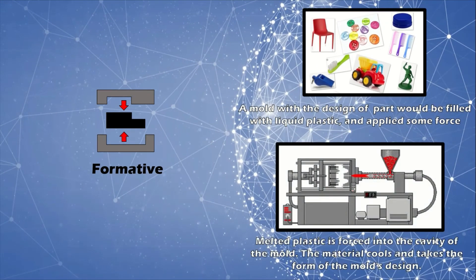Injection molding is a way to manufacture goods using the formative process. A mold is made in the form of the part needed. Melted plastic is forced into the cavity of the mold. The material cools and hardens and takes on the form of the mold's design. Then the newly formed part is removed and the mold refilled.